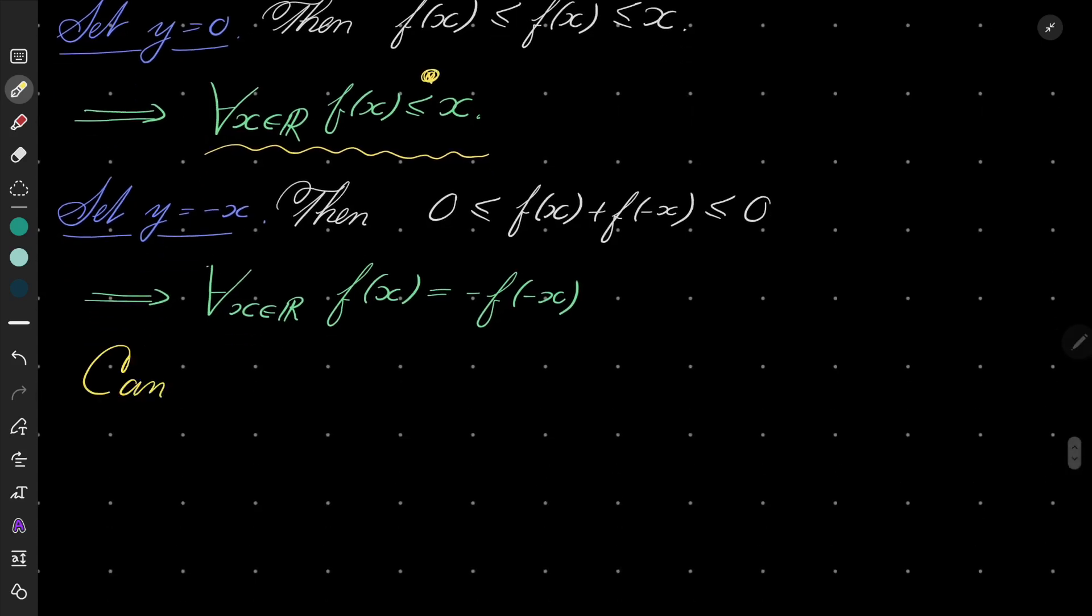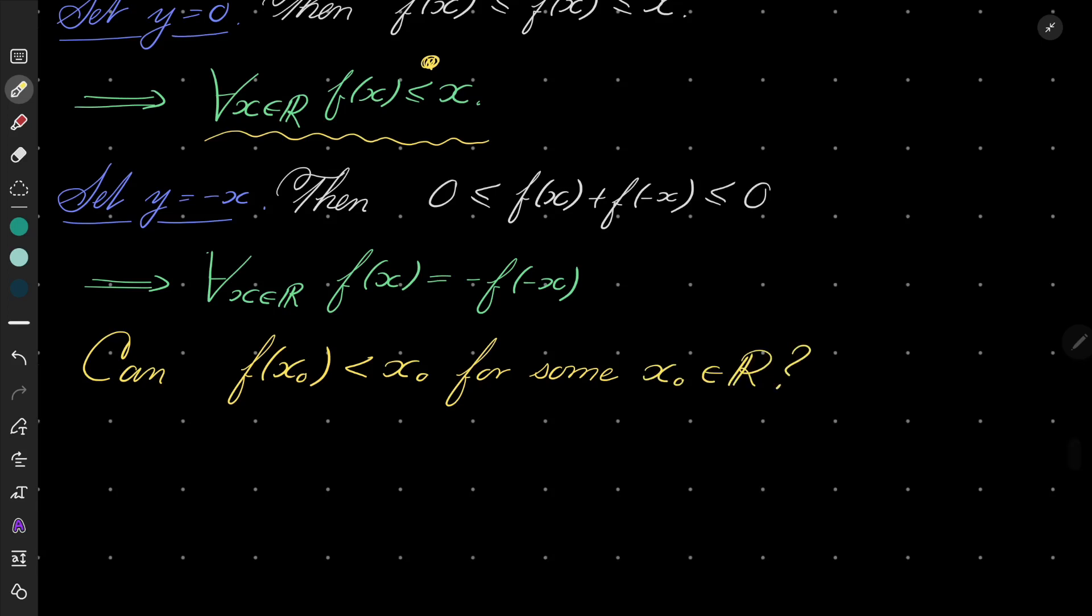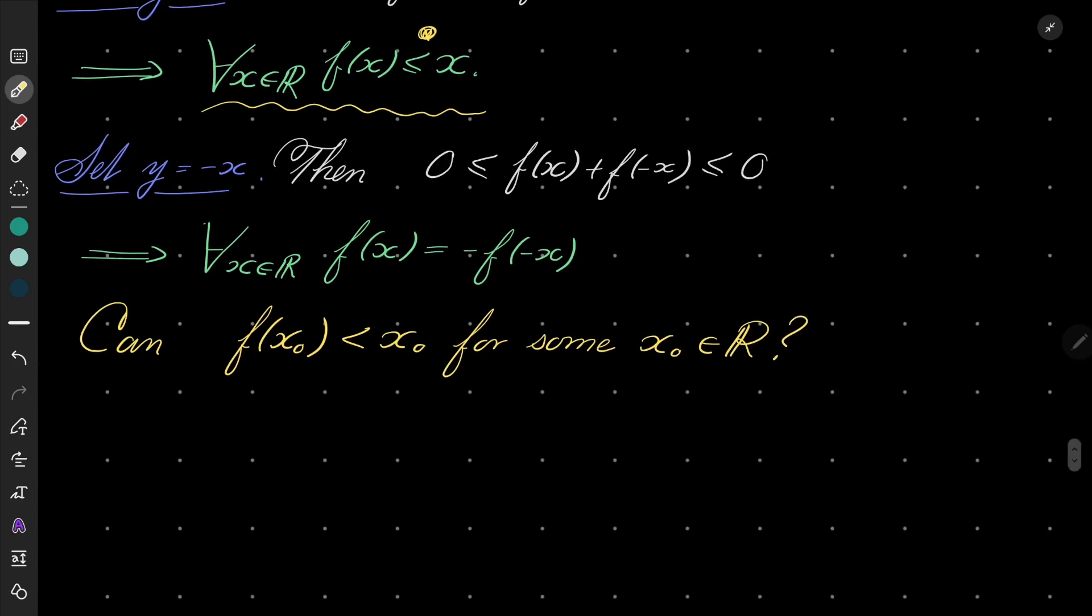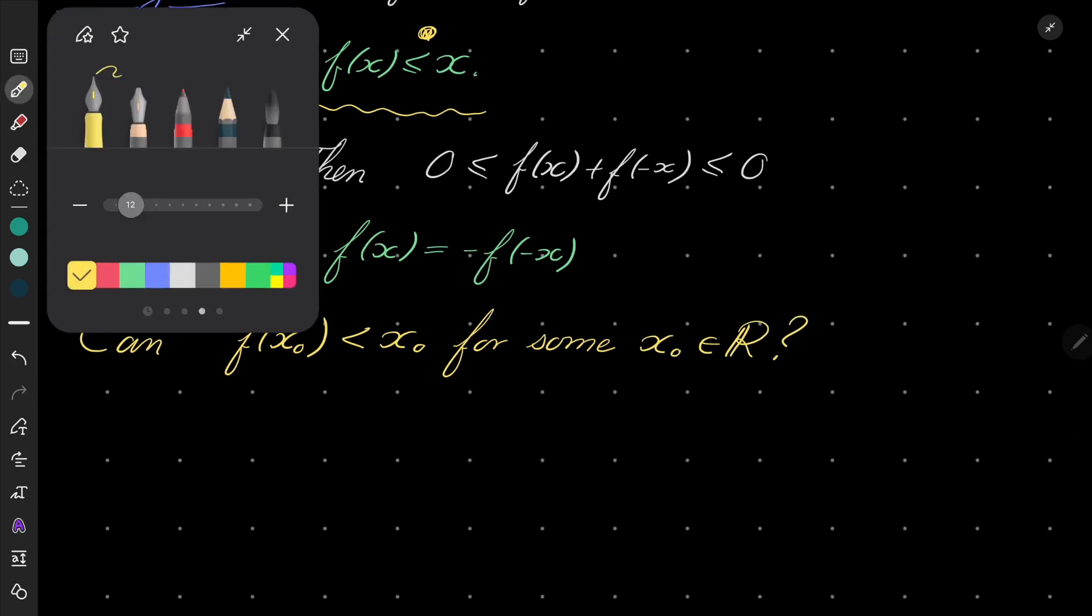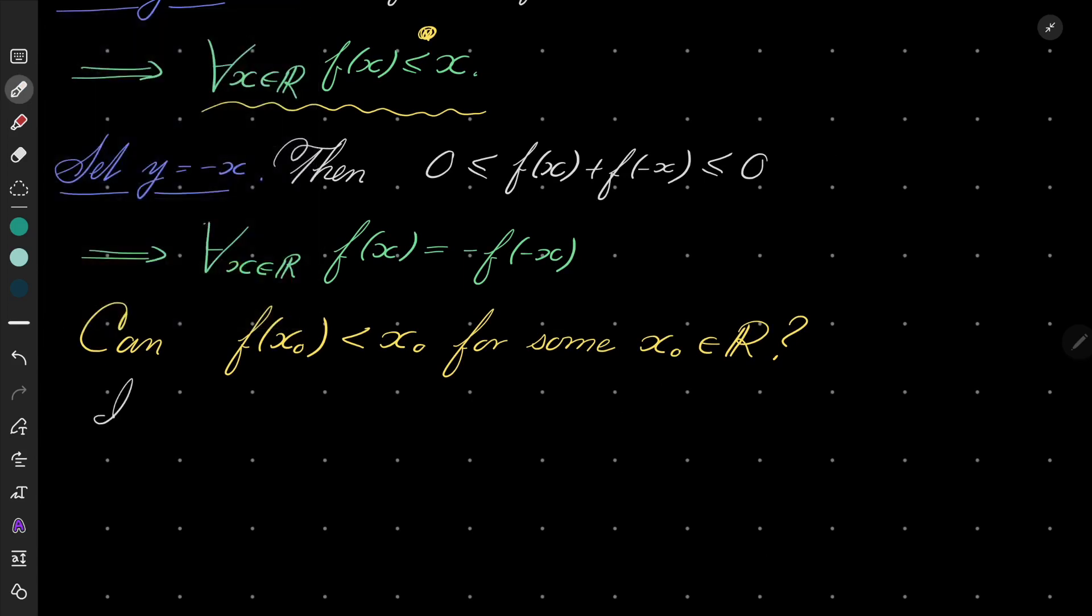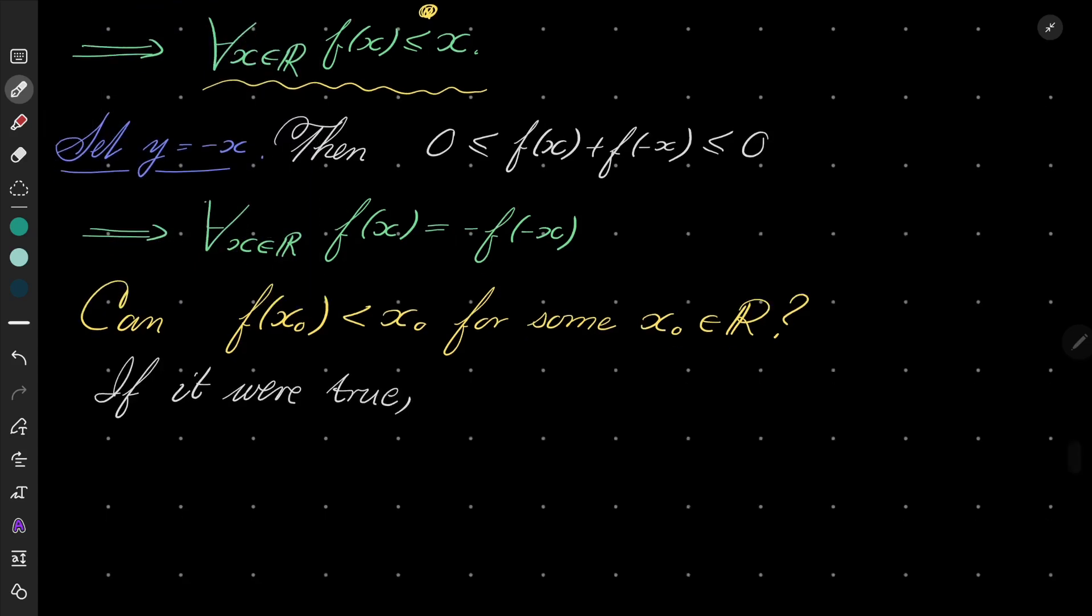So, can f(x₀) be strictly less than x₀ for some argument x₀? Well, it can't, because if it were to be true, that would mean the following.